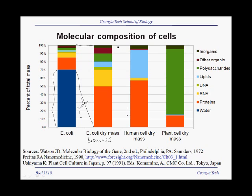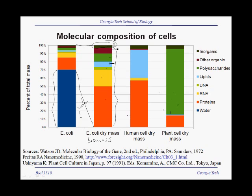The biomass includes all of the organic molecules in a cell, excluding the few percent of inorganic molecules shown at the top. If we look at the biomass of E. coli cells, protein is the most abundant macromolecule, shown here in orange. Next are the nucleic acids — RNA in yellow and DNA in light green. Then lipids in light blue and polysaccharides in dark green. There are also other small organic molecules, which are not macromolecules.